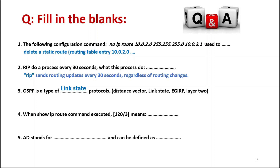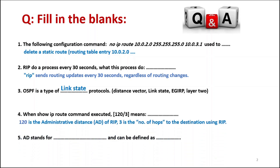Number four: when the 'show ip route' command is executed, the output '120/3' means 120 is the administrative distance (AD) of RIP, and 3 represents the number of hops to the destination using RIP — that is, how many routers away the destination is from the current router.